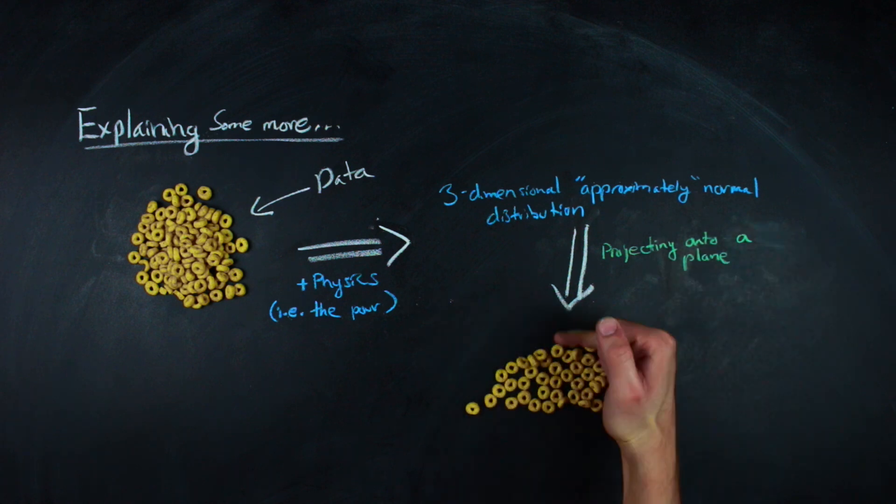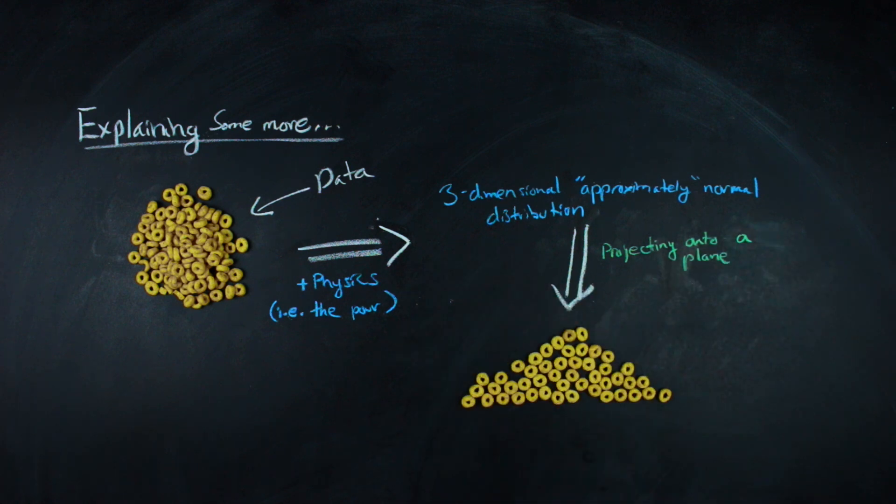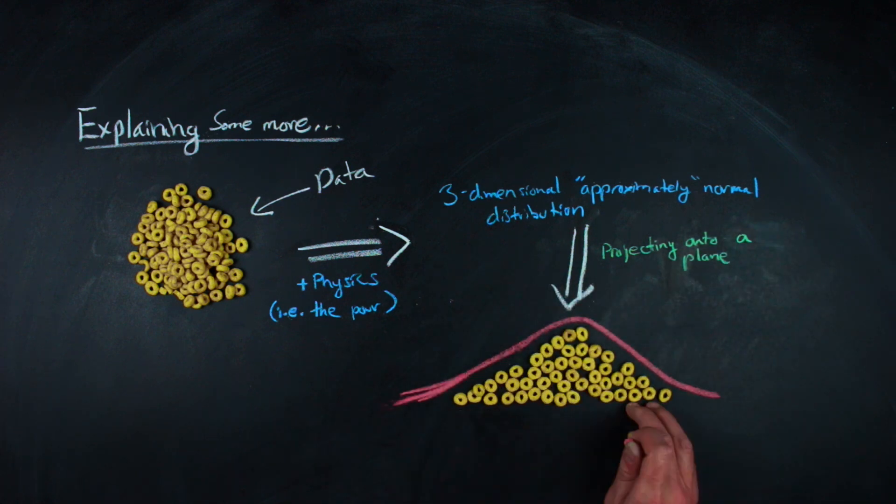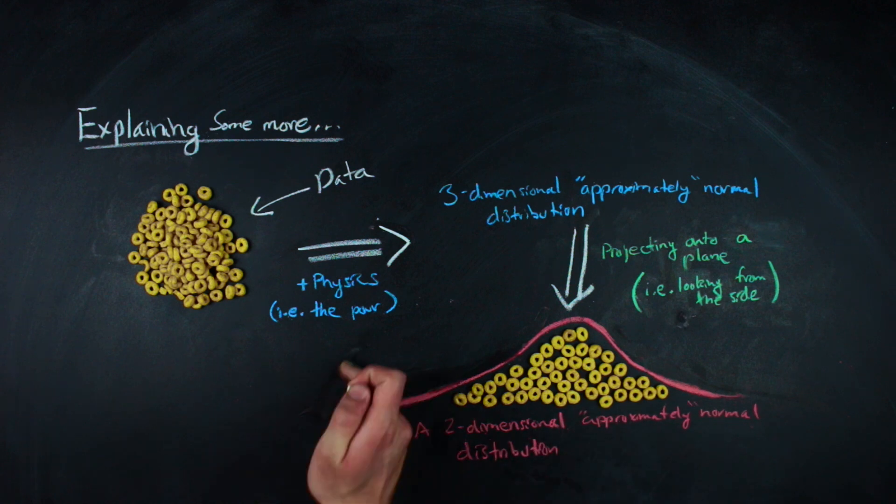We get to a two-dimensional example by looking at the three-dimensional one from the side, which is what we did with the Cheerios. Mathematically, we're projecting the three-dimensional distribution onto a plane, which generates the two-dimensional version of the distribution.